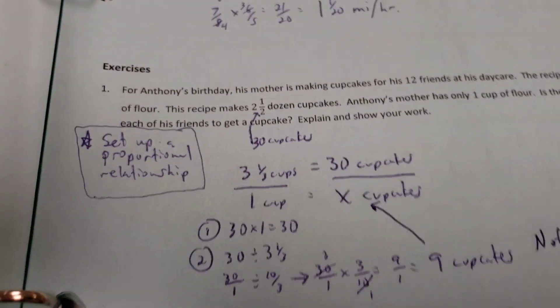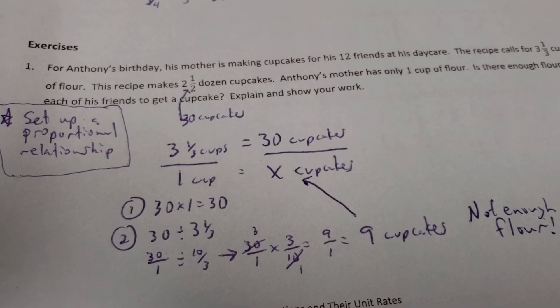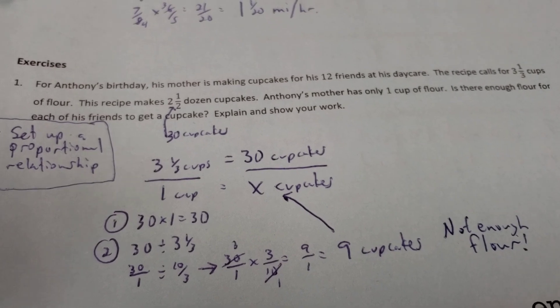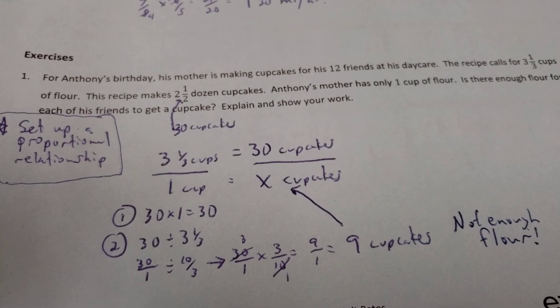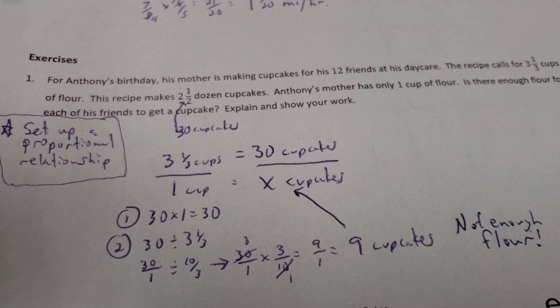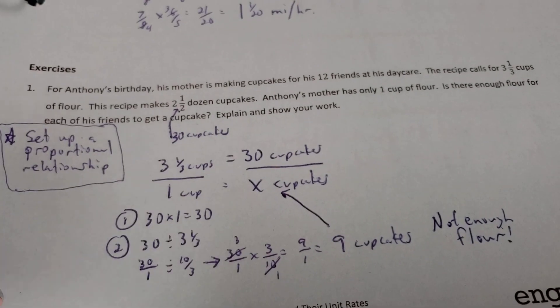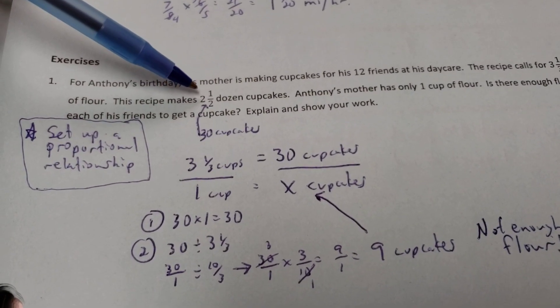Now, here, in our next problem, in our exercises, it says, For Anthony's birthday, his mother's making cupcakes for his 12 friends at his daycare. The recipe calls for 3 and a 1/3 cups of flour. This recipe makes 2 and a half dozen cupcakes. Anthony's mother has only 1 cup of flour. Is there enough flour for each of his friends to get a cupcake? Explain and show your work. Now, one thing up here, before we do get started, is the 2 and a half dozen.